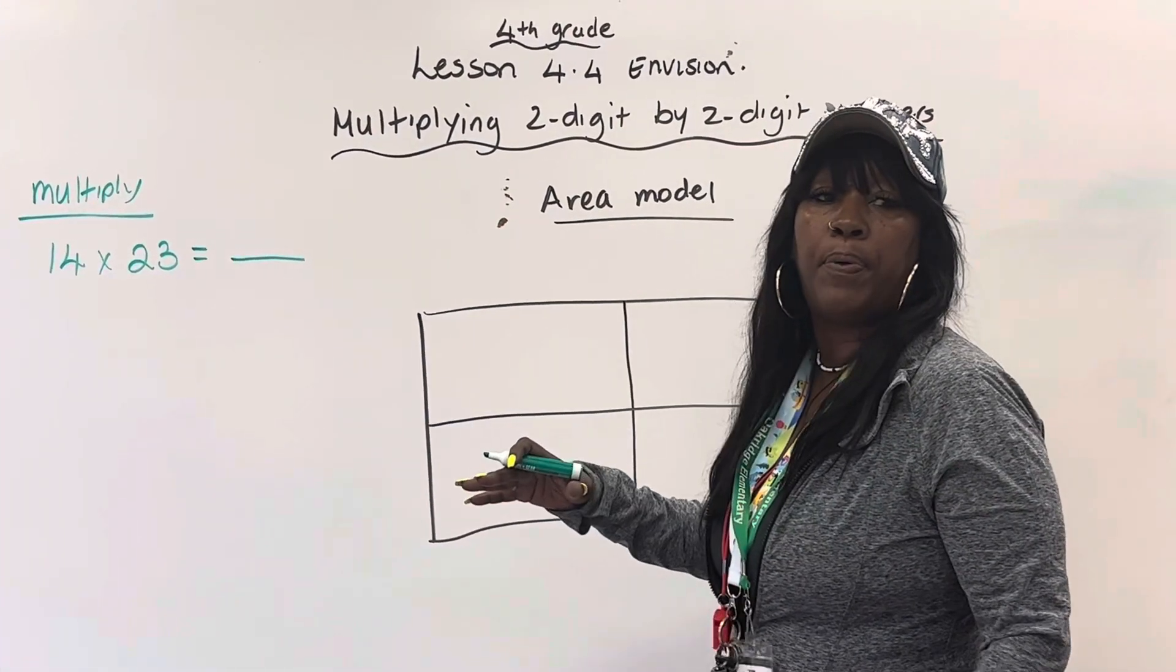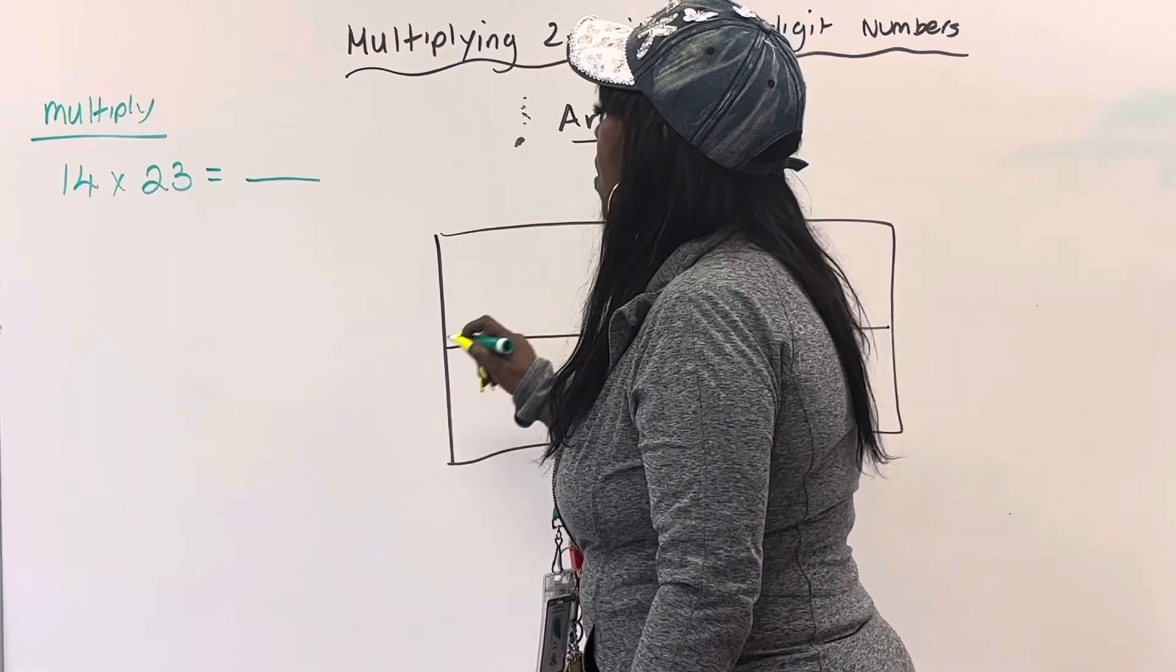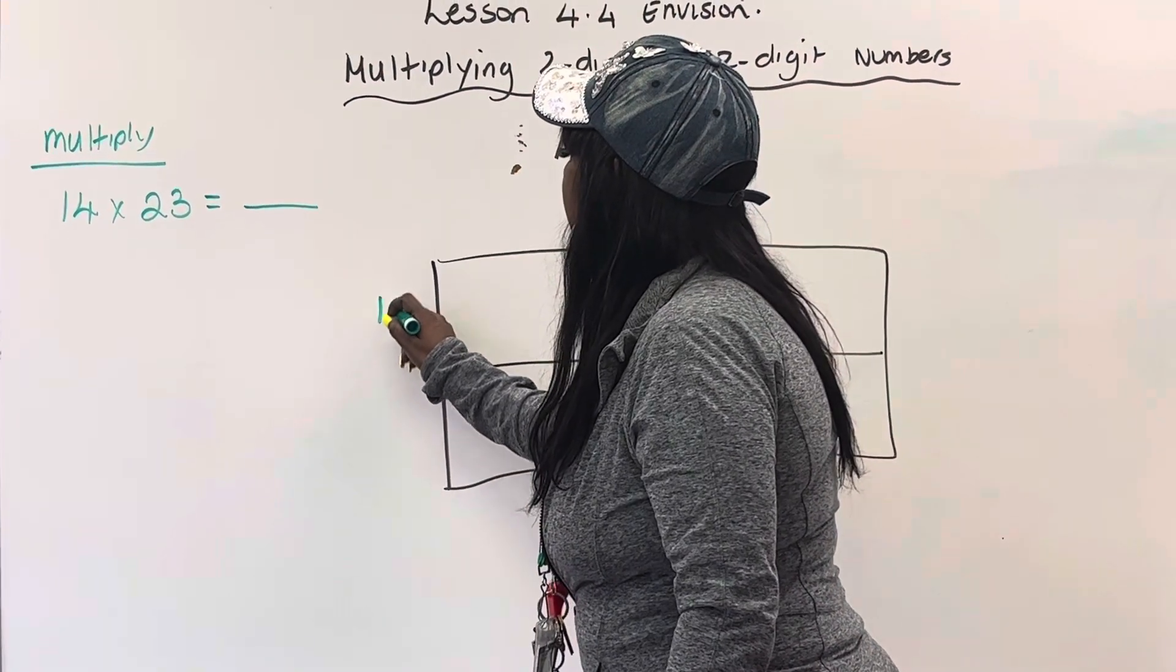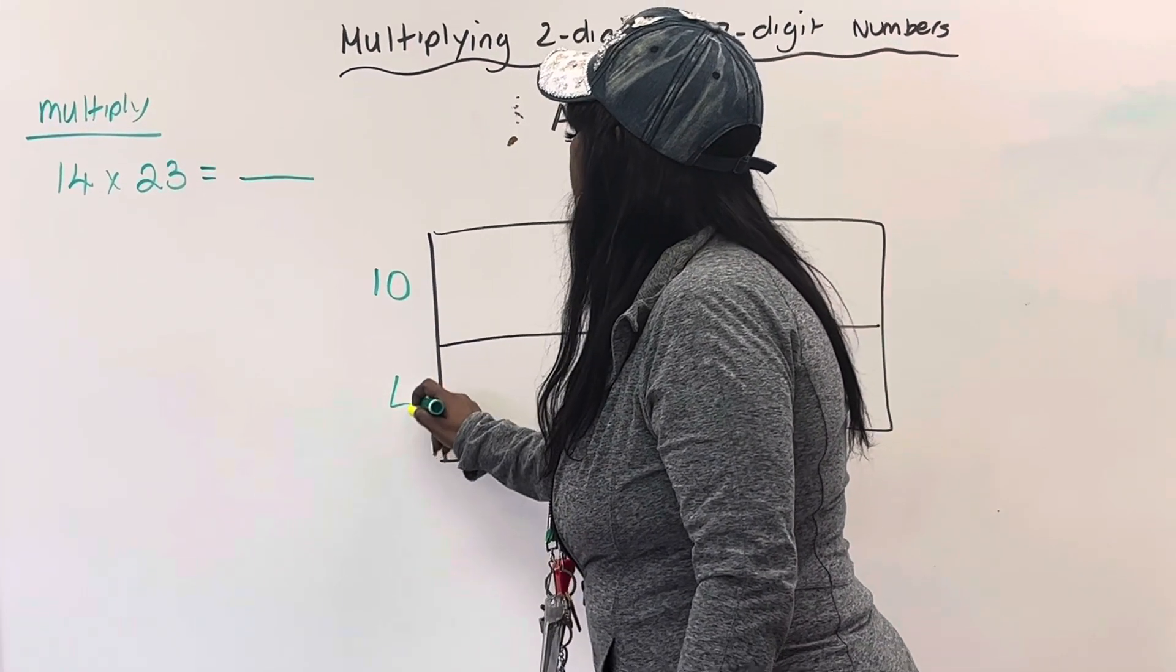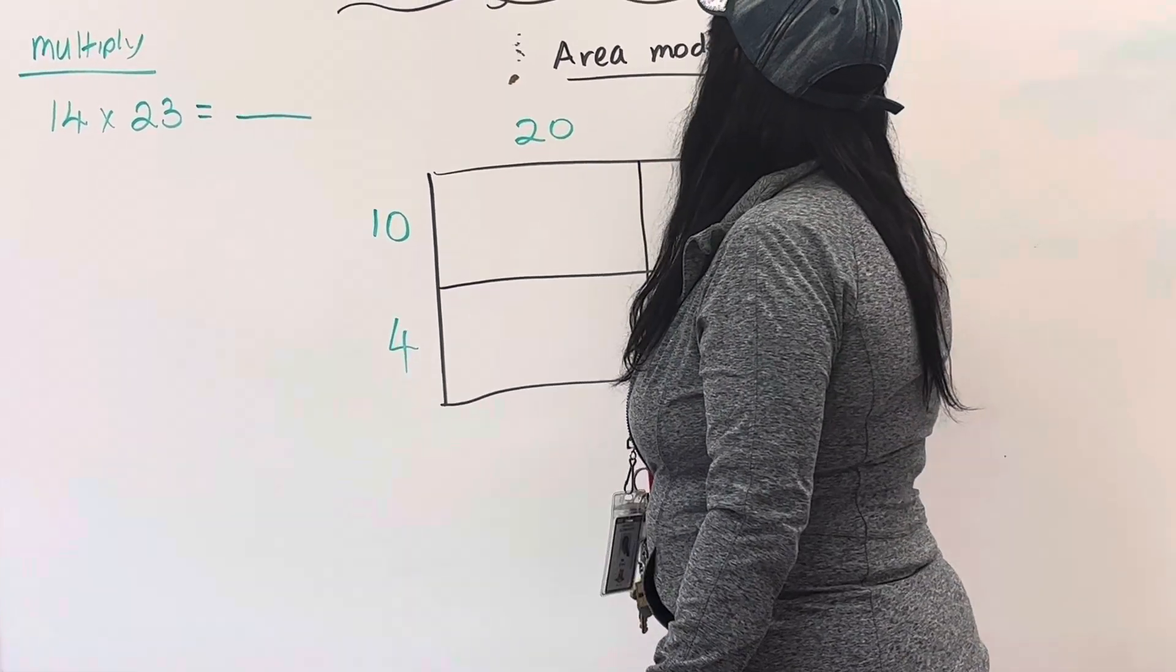We're going to split up the numbers into tens and ones. So over here I'm going to have 10 and 4 for 14. Now here I'm going to have 20 and 3.